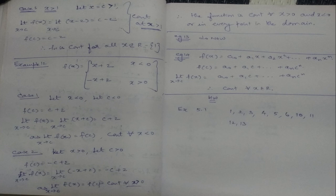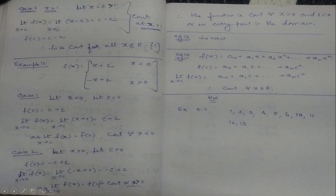Let us continue with Example 14: show that every polynomial function is continuous. The polynomial function is f(x) = a₀ + a₁x + a₂x² + … + aₙxⁿ. f(c) = a₀ + a₁c + … + aₙcⁿ. Limit as x→c of f(x) — just substitute c — gives the same expression. Therefore, every polynomial function is continuous for all x ∈ ℝ. We have done Examples 1 to 14.